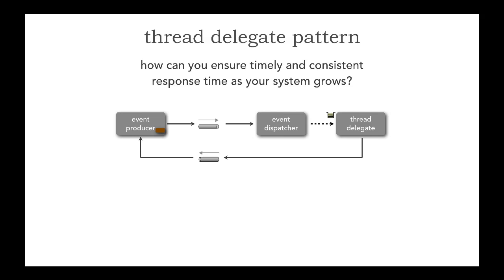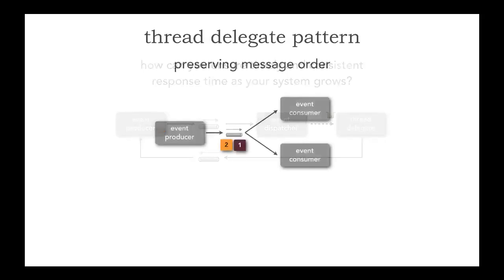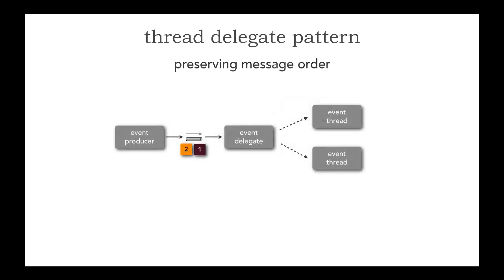There's a unique aspect of the thread delegate pattern. Besides allowing businesses to grow, it also allows highly parallel, high-speed processing while preserving message order. Queues are FIFO — first in, first out. So of course I can dequeue messages in the right order; one will always be dequeued before two. But watch this — message two finishes before message one. What if those needed to be processed in the same order? Let's take a look at how the thread delegate pattern allows this to happen.